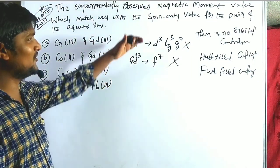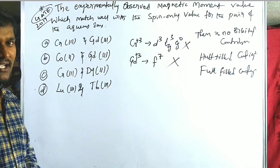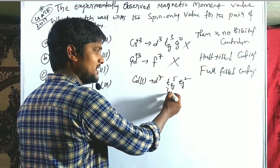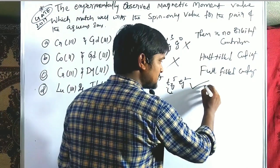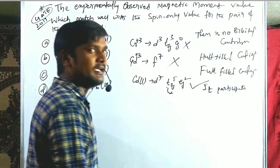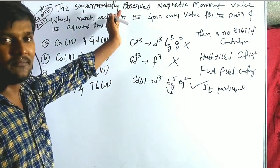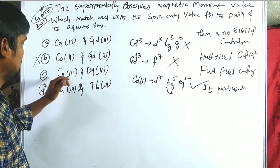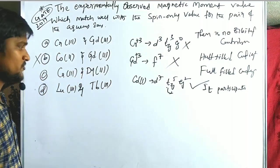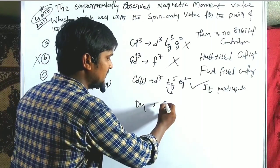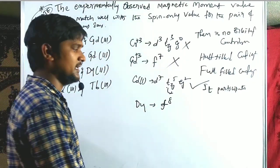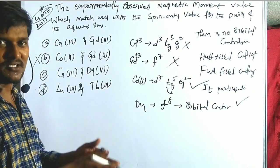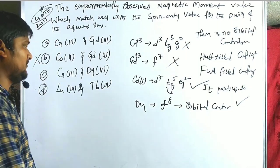Option A looks correct, but let's check the remaining options. Cobalt²⁺ is d⁷, meaning t₂g⁵ eg² — t₂g⁵ is unsymmetrical, so it participates in orbital contribution. Anything that participates in orbital contribution cannot have equal observed and spin-only values, so option B is wrong. Chromium³⁺ is fine, but Dysprosium³⁺ is f⁸ — it participates in orbital contribution — so option C is also wrong.